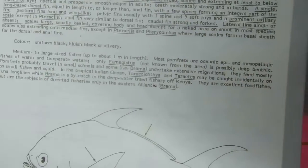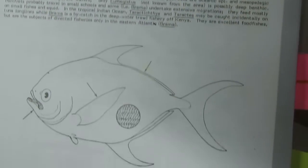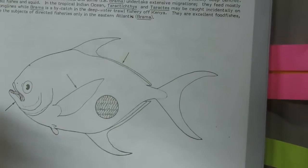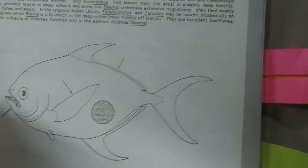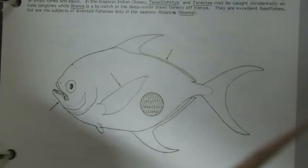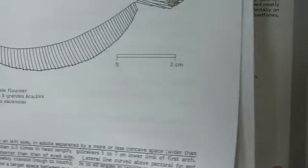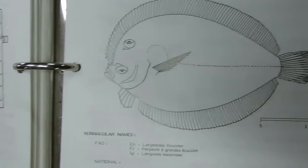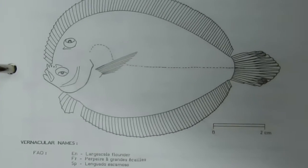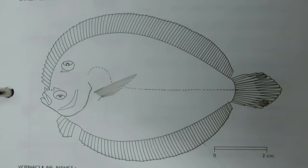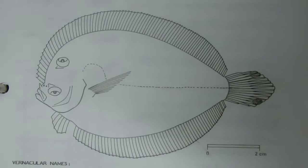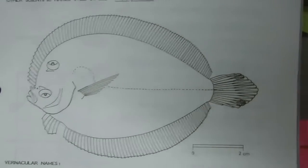In the Citharidae species, the lateral line is absent on the blind side. In the case of Pseudorhombus species, the lateral line is fully developed on both sides.